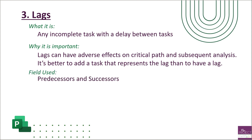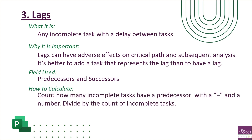The fields used to find this are the predecessors and successors fields. To calculate it, you count how many incomplete tasks have a predecessor with a positive plus sign and a number, then divide that by the total incomplete tasks. DCMA permits at most five percent of your tasks to have lags.